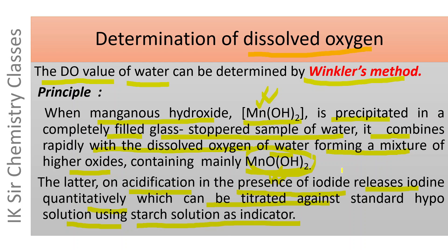When MnOOH₂, formed by the reaction between Mn(OH)₂ and dissolved oxygen, is acidified in the presence of iodide ion, I₂ is released quantitatively, and this I₂ can be titrated against a standard hypo solution using starch solution as indicator.